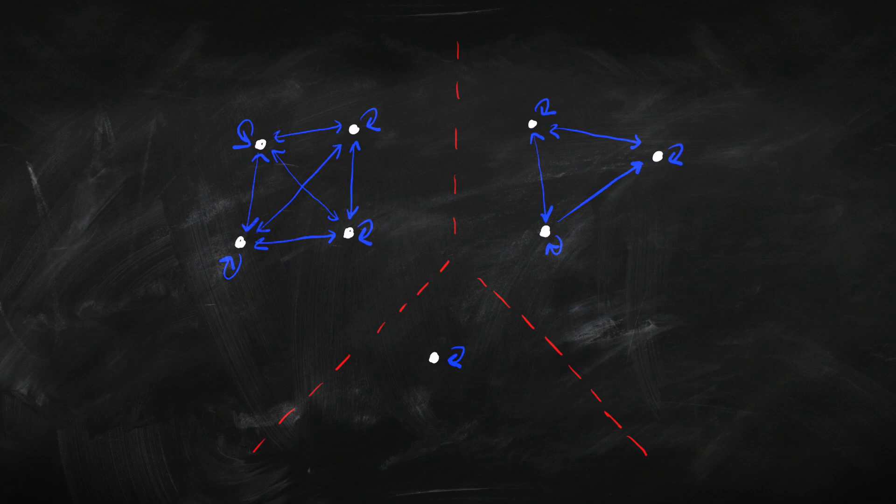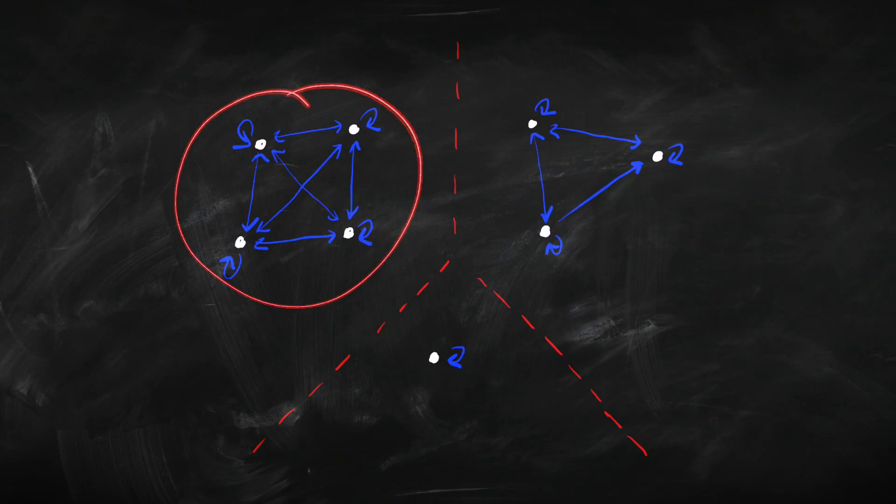Partition models are important in modal logic because in a certain way they allow us to simplify — they allow us to ignore the accessibility relation in a certain sense. Suppose I'm in one partition: I can never get to any worlds in other partitions. So I can just focus on the partition I'm in. Then when evaluating the box or the diamond — every accessible world or some accessible world — I can just say every world in the partition or some world in the partition. In an equivalence model, I can forget about the accessibility relation and just talk about all or some of the worlds in the partition we're interested in.